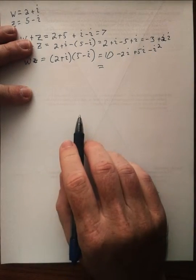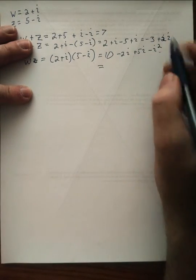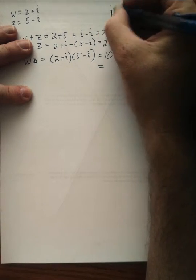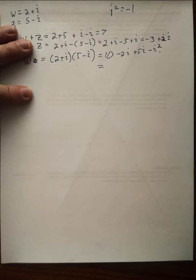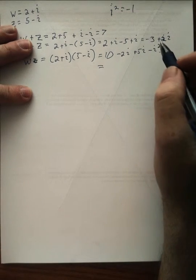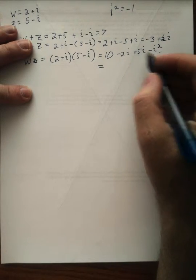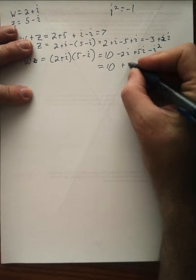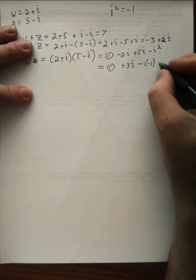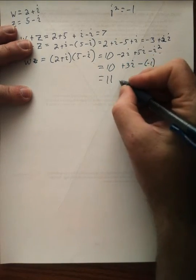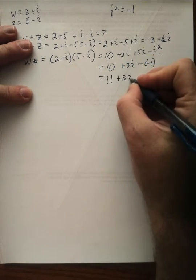Now, when we're simplifying this and combining like terms, we have to recognize that i squared is negative 1. So here, this is 10. I can combine these plus 3i minus negative 1, which is plus 1. So this ends up being 11 plus 3i.